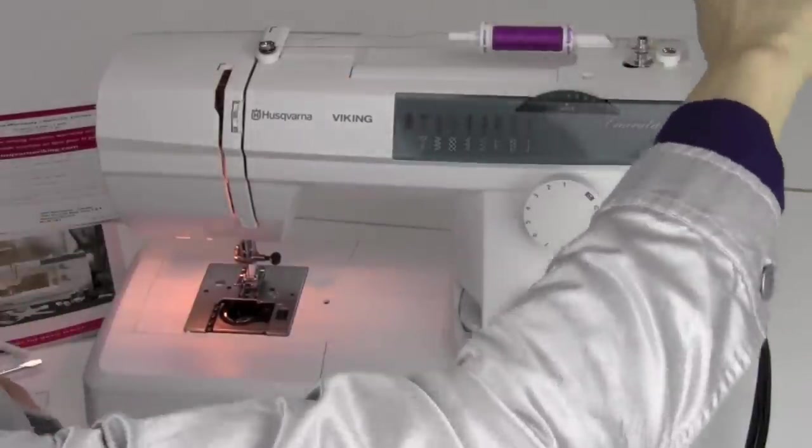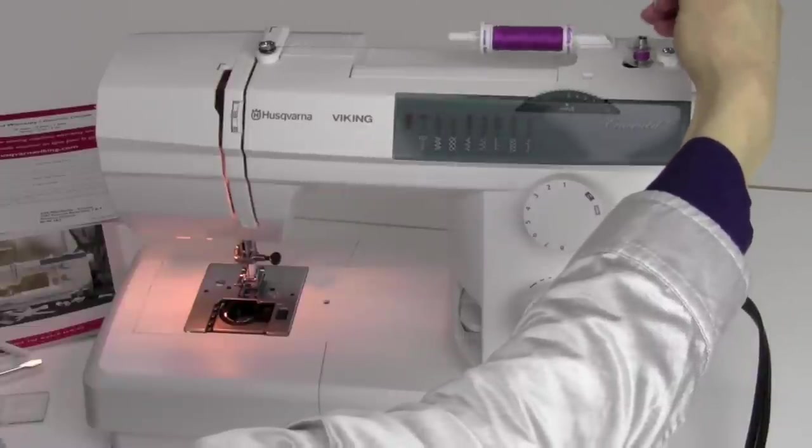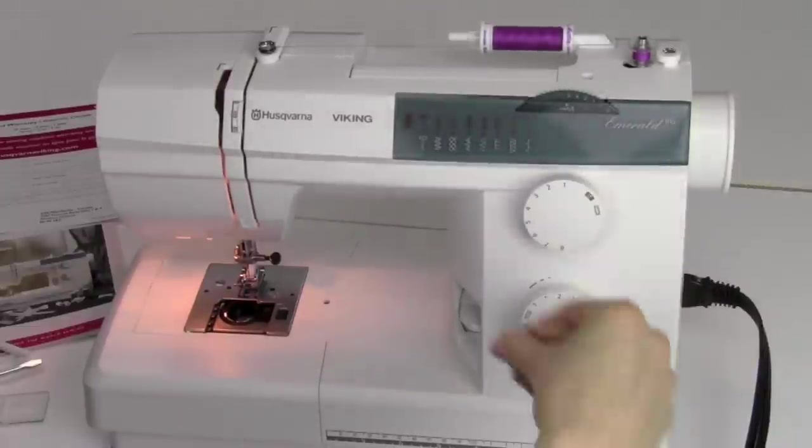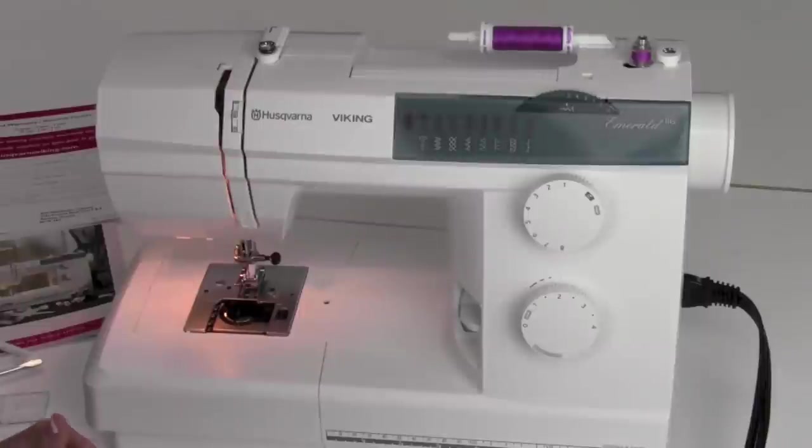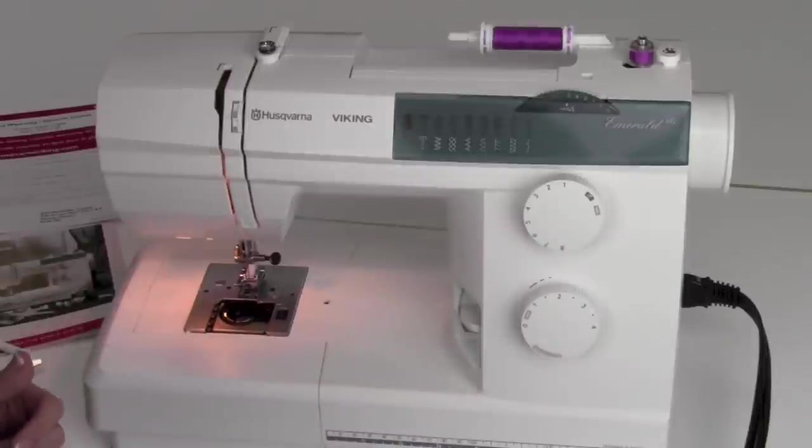By holding the thread straight up and stepping on the foot control, that will go ahead and let that thread eventually break off and continue to wind the whole rest of the bobbin. These really fill up fast, and they fill up full. These bobbins are a great size for this machine. Once it gets all the way full, it will stop spinning, so just keep your foot on the foot control.